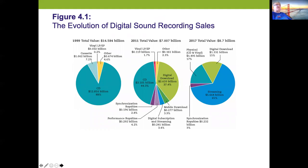Looking at the evolution of digital sound recording sales from 1999 to 2017: in 1999, CDs were about 88% of sales, cassettes maybe 7%, vinyl 2%. By 2011, CDs dropped and digital downloads jumped up to almost 37%, with mobile downloads, digital subscriptions, and streaming starting to appear. By 2017, physical CDs and vinyl were about 17%, digital download about 15%, but streaming jumped up to 65%. And today, streaming has gone even further.